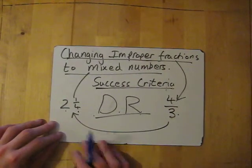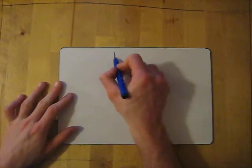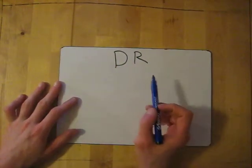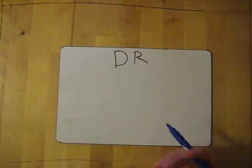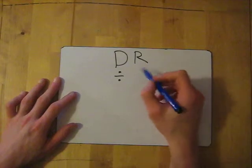First, we write DR. What does DR stand for? Think about math: D stands for divide, and in relation to divide, R stands for remainder. Divide, remainder.